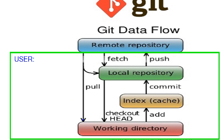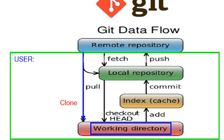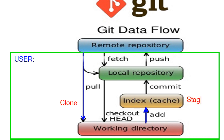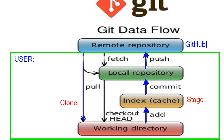First, developers get the code from the central repository using the command clone. Clone is the process of retrieving code from the central repository. Once we get the code, we can modify it in the working directory, then add the code to the index area — also called the stage area. Then we commit the code to the local repository. After that, the code can be saved to the central repository using the command push. Here, GitHub is considered as the central or remote repository.